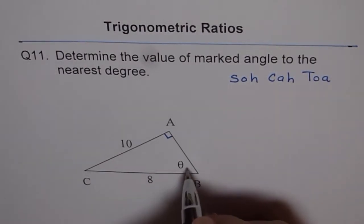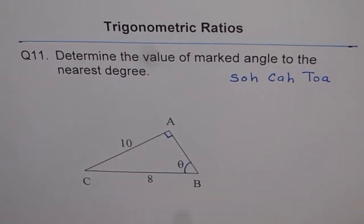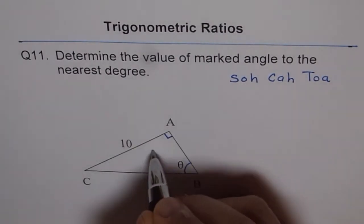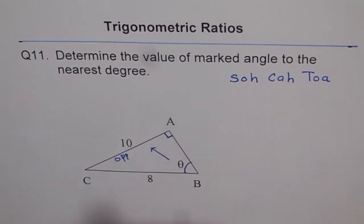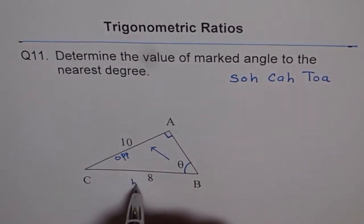Now, in the given triangle, we need to find this angle theta. What are we given? We are given the side opposite to theta, and we are also given hypotenuse.